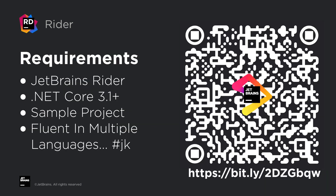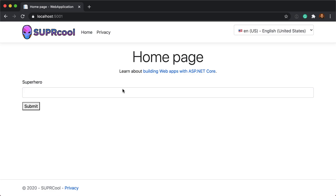Before we get started, we'll need a copy of JetBrains Rider, .NET Core 3.1 or higher, and the sample project, which is accessible via the visible QR code on the right. It also doesn't hurt to be fluent in multiple languages.